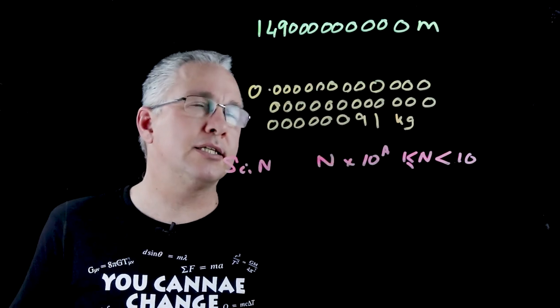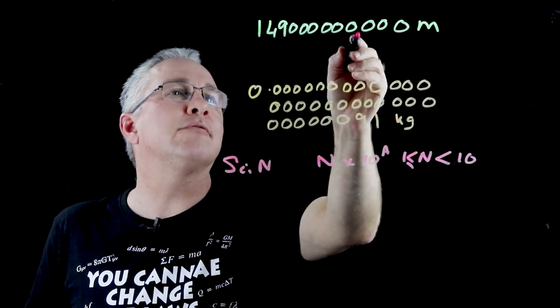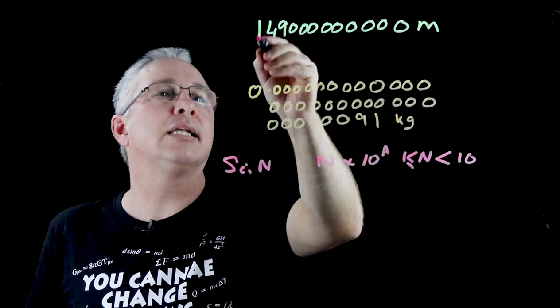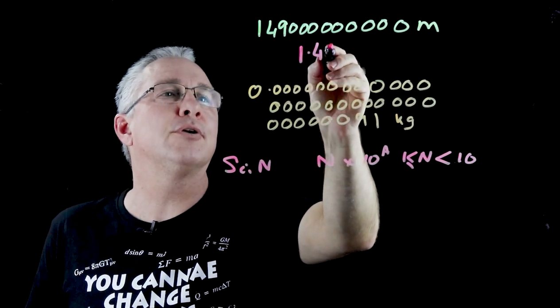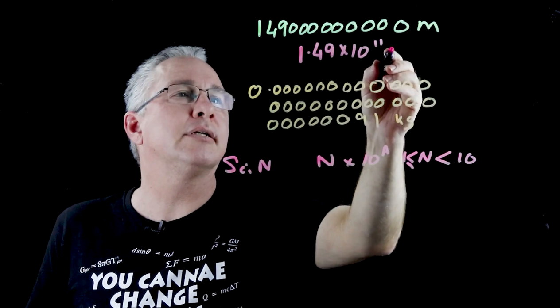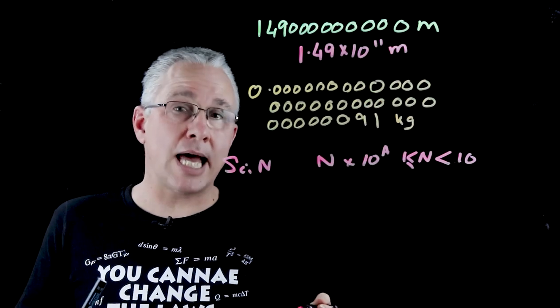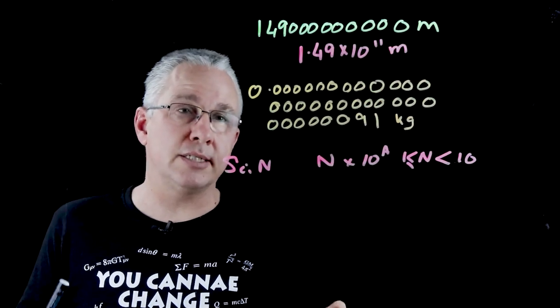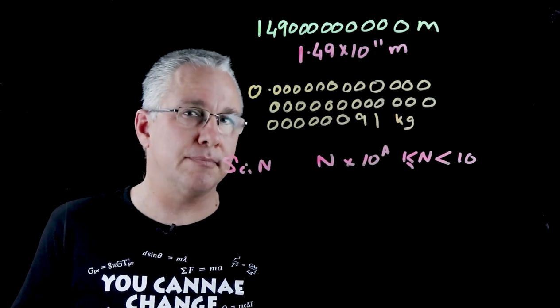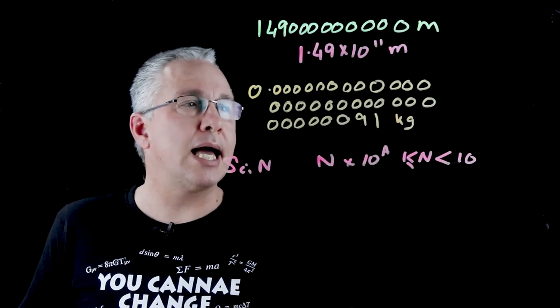So if I want to put that into scientific notation, I count the places and I get 1.49 × 10^11 meters. So that is actually the distance. You can see that's a much easier number to record.